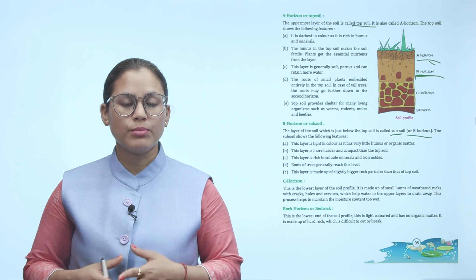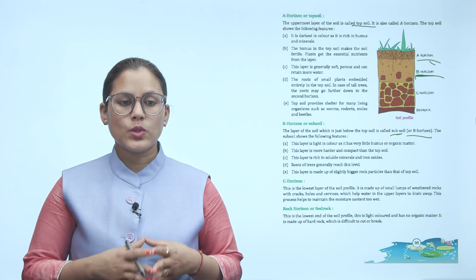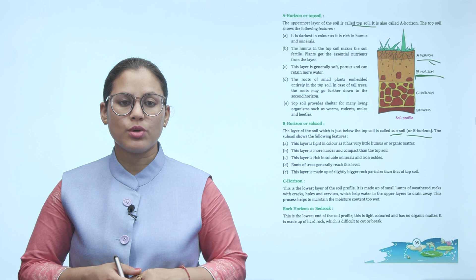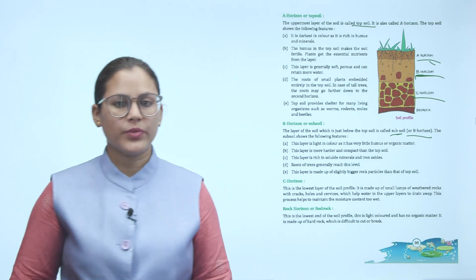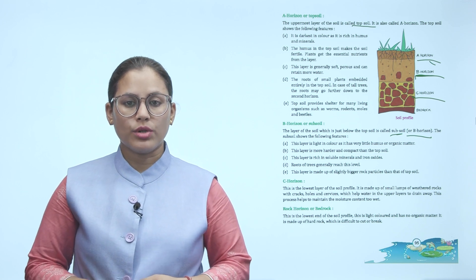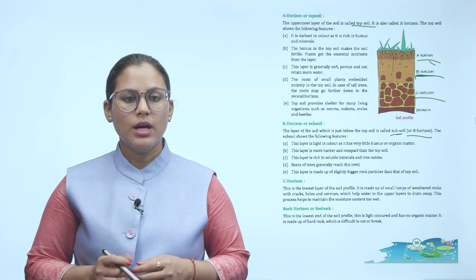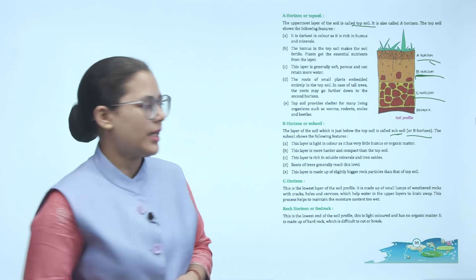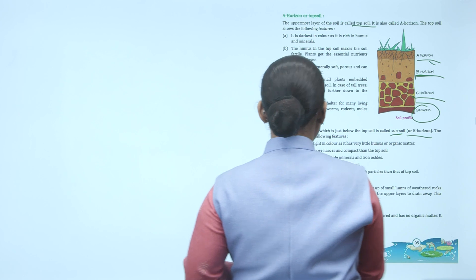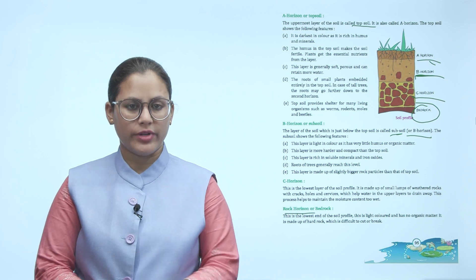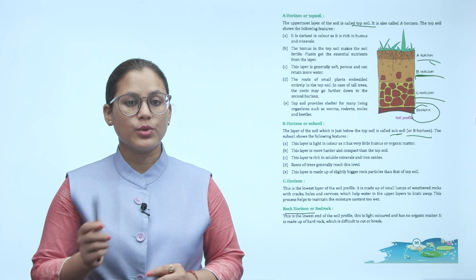C horizon: This is the lowest layer of the soil profile. It is made up of small lumps of weathered rocks with cracks, holes and crevices, which help water in the upper layers to drain away. This process helps to maintain the moisture content. This layer is light colored and has little organic matter. It is made up of hard rock which is difficult to cut or break.